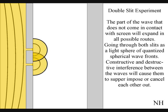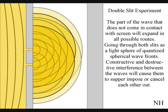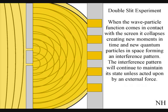The part of the wave that does not come in contact with the screen will go through both slits. Interference between the waves will cause them to superimpose or cancel each other out. When this wave-function comes in contact with the screen, it will collapse, creating a moment in time and an interference pattern.